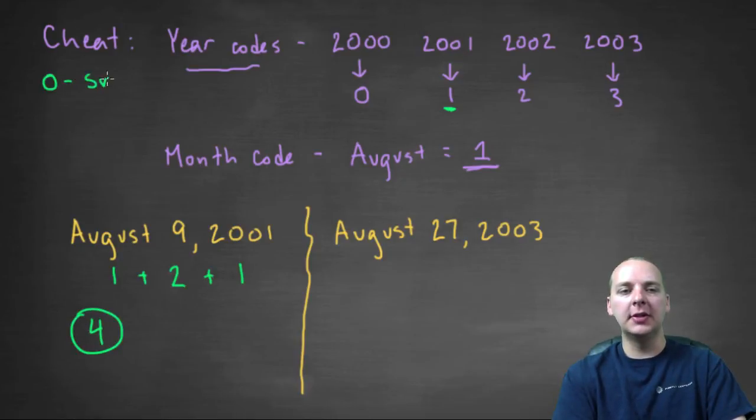And so when you think about the days of the week, zero is a Sunday, all the way through six, which is a Saturday. What would the four land on? That would be a Thursday.